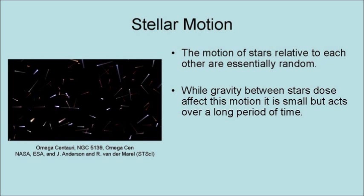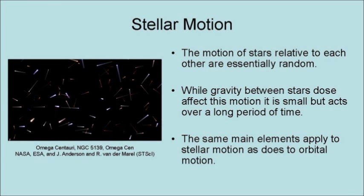The motions of stars relative to each other are essentially random. While gravity between stars does affect this motion, it is small but acts over a long period of time. However, the same main elements applied to stellar motion as does to orbital motion.